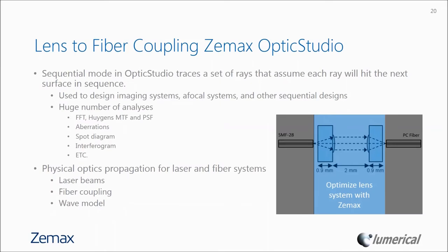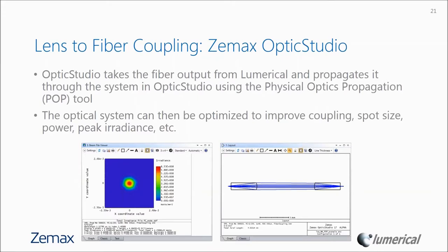In OptiStudio's sequential mode, rays are traced assuming each ray will hit the next surface in sequence. This mode is used for designing imaging systems, afocal systems, and other sequential designs with analyses including FFT and Huygens MTF and PSF, aberrations, spot diagrams, and interferograms. The physical optics propagation (POP) tool uses the wave model of light and is effective for laser beams and fiber coupling optimization. OptiStudio will take the fiber output from Lumerical and propagate it through the system, then optimize optical power to improve fiber coupling, spot size, power, and peak irradiance.